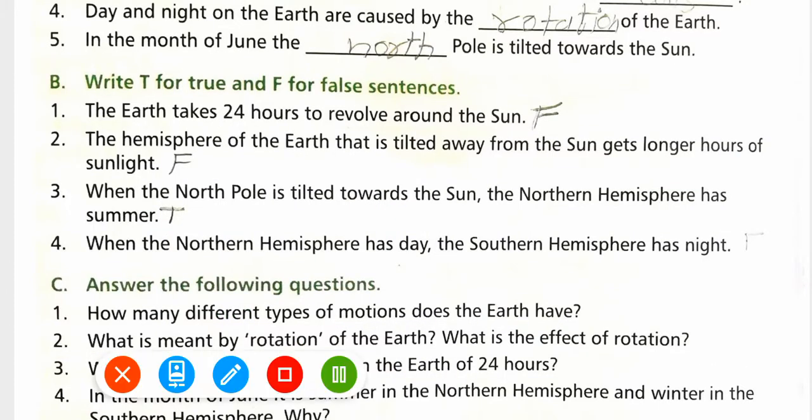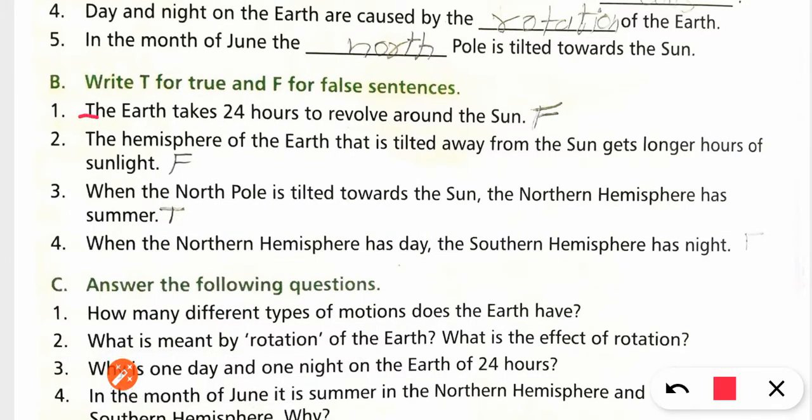Next exercise, true and false. The earth takes 24 hours to revolve around the sun. False, because 24 hours it takes for rotation, not revolution. Revolution takes 365 days, 6 hours.